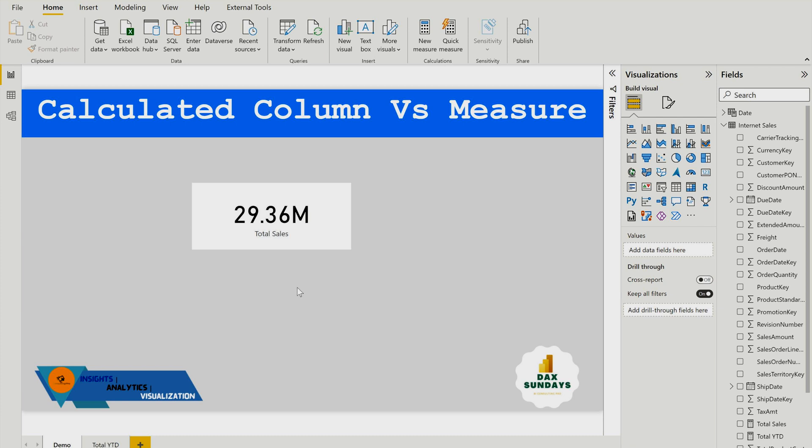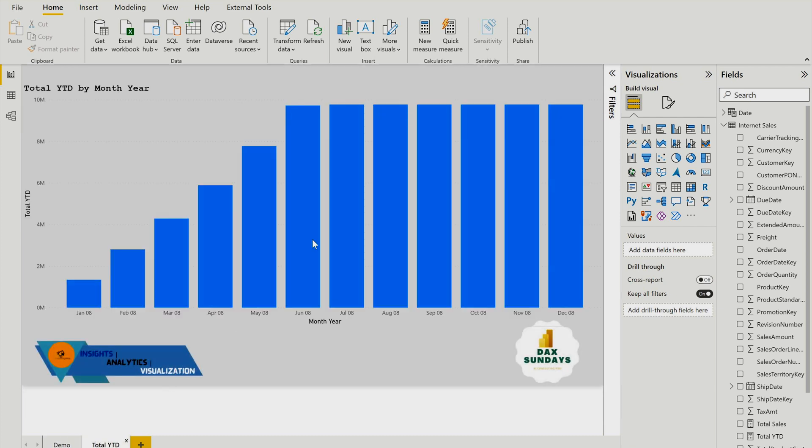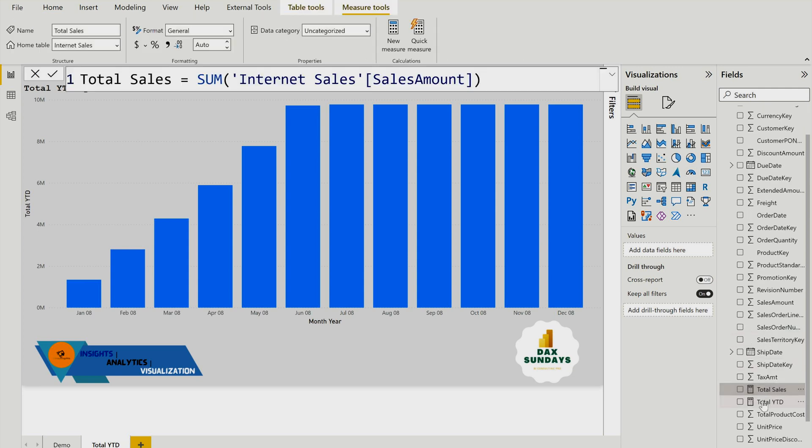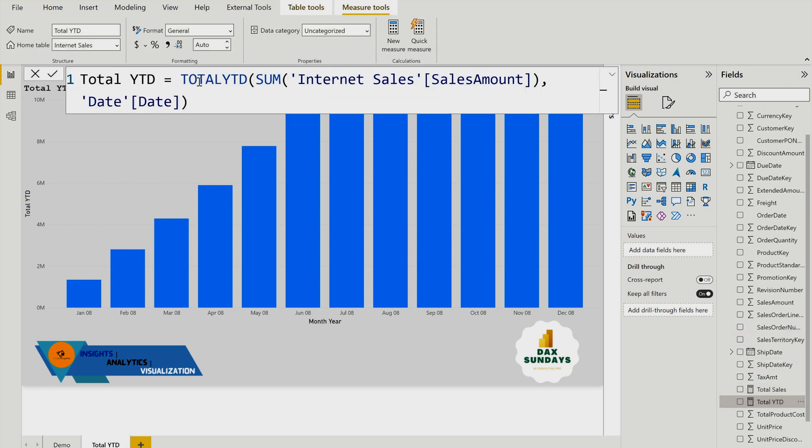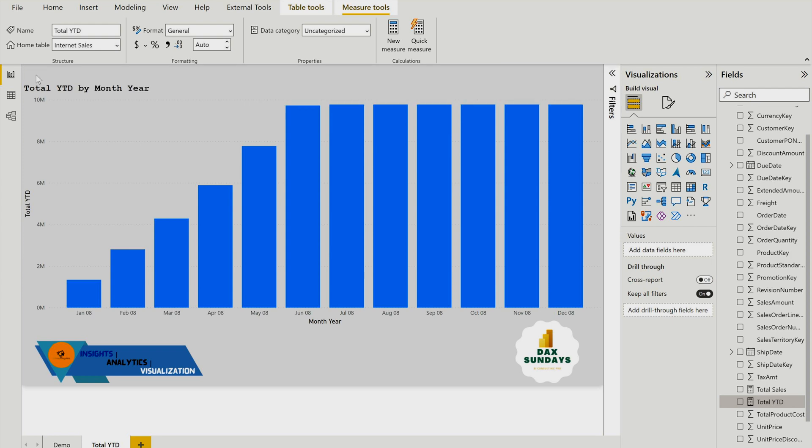In my another page I have also created another measure which is Total YTD, and you can see that I have created a visualization out of that. Let me show you how I have created it. In total YTD I'm using this TOTALYTD function which is operating over another DAX function which is SUM, which is calculating the total sales, and then context here is the date. So that's how you can create measures and use them at different places.